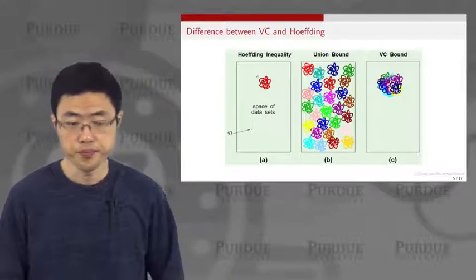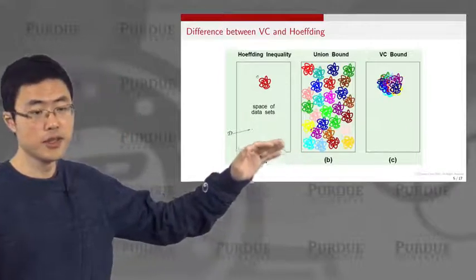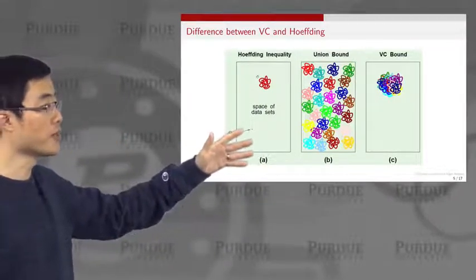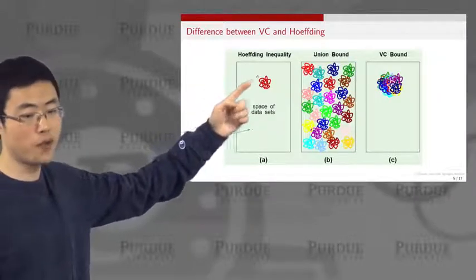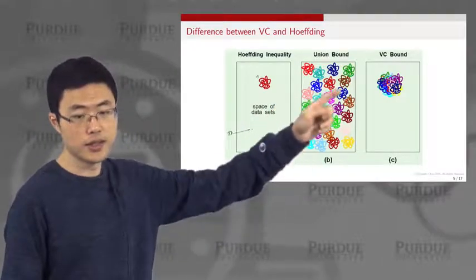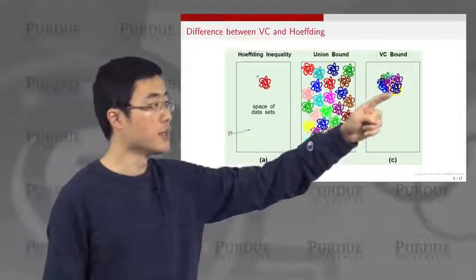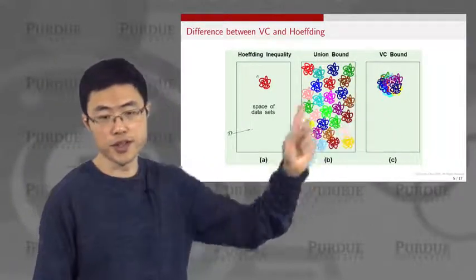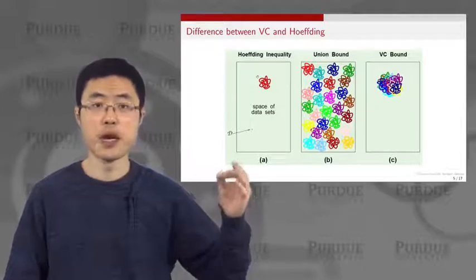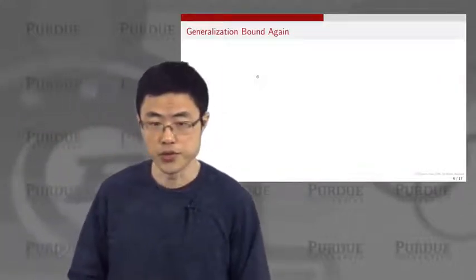Let's take a quick look at the difference between the VC dimension and the Hoeffding inequality. If you are only looking at one Hoeffding inequality, you're only looking at one set of data points. If you use a union bound, you're assuming all the hypotheses are located independently. But the VC bound says that all these hypotheses overlap — that is the key difference. And that's why if you can show the growth number and draw an upper bound on the growth number, then hopefully you can reach the VC bound rather than the loose union bound.